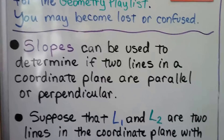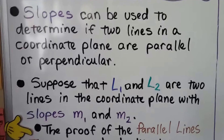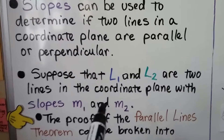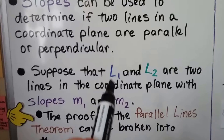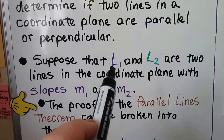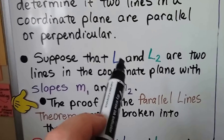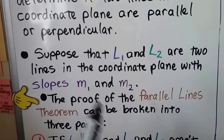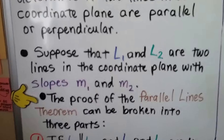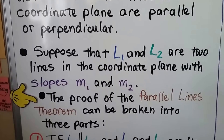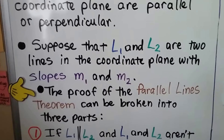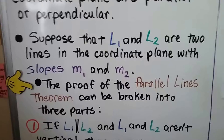Slopes can be used to determine if two lines in a coordinate plane are parallel or perpendicular. When you see a little 1 or 2 written below like this, that's a subscript — it's telling us that's the first one and that's the second one. Even for the slope m, m sub 1 is the first slope and m sub 2 is the second slope. So suppose that l sub 1 and l sub 2 are two lines in the coordinate plane with slopes m sub 1 and m sub 2.